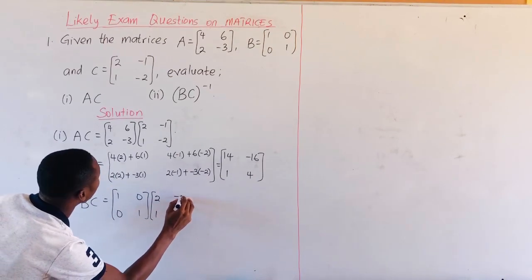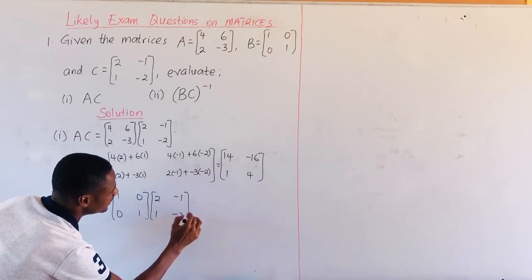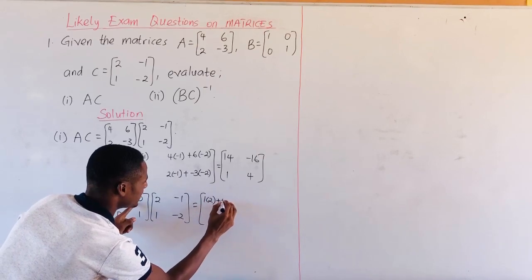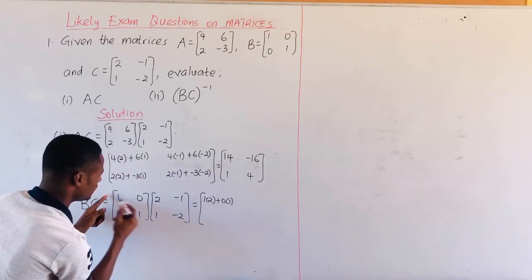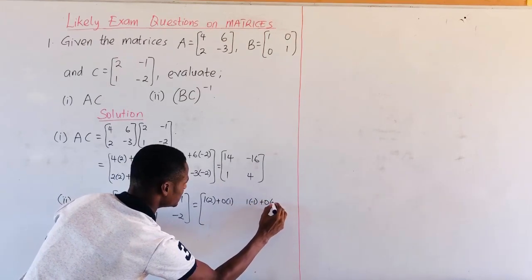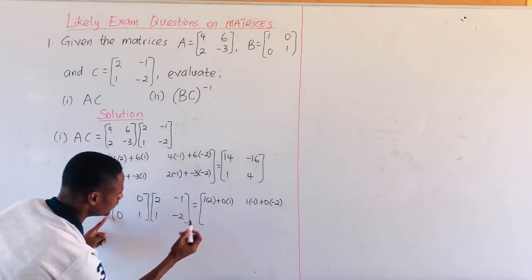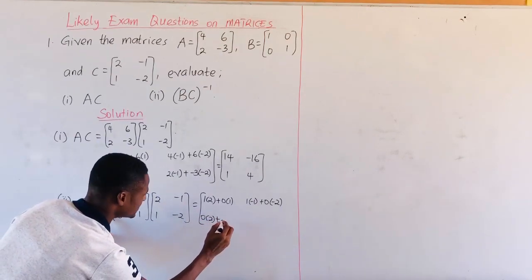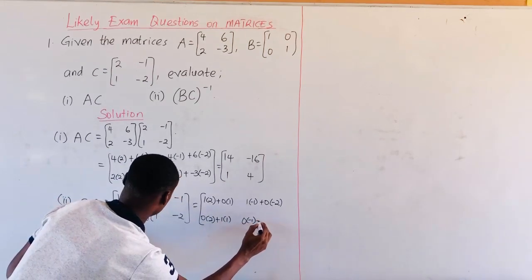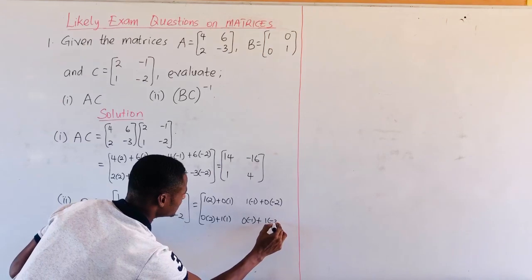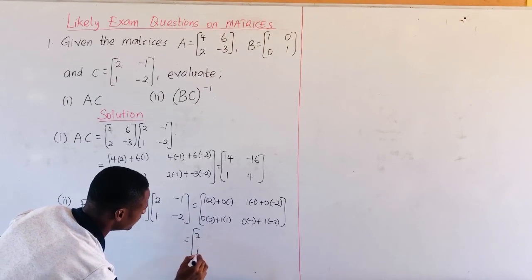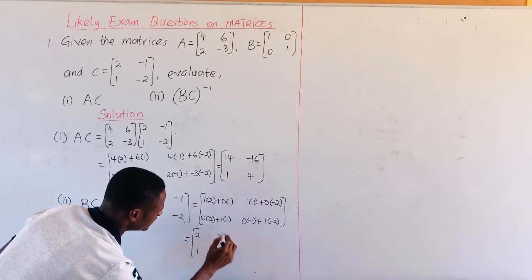Matrix C is 2, 1, negative 1, negative 2. That gives us: row by column — 1 times 2 plus 0 times 1; row by column — 1 times negative 1 plus 0 times negative 2; row by column — 0 times 2 plus 1 times 1; row by column — 0 times negative 1 plus 1 times negative 2. This gives us 2, 1, negative 1, negative 2.